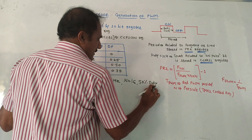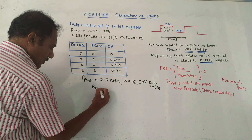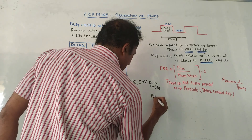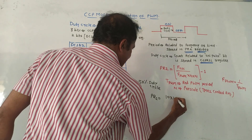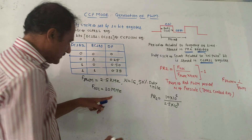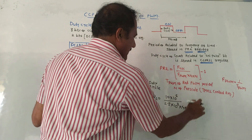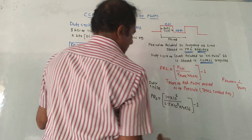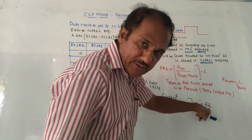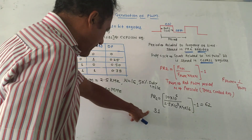If the value of f_oscillator is not mentioned, we choose 10 MHz. First, calculate PR2 using the formula: PR2 = (f_oscillator / f_PWM / 4 / N) − 1 = (10×10⁶) / (2.5×10³) / 4 / 16 − 1. Solving this gives PR2 = 62. Now for 50% duty cycle: 50% of 62 = 31. So the required count equals 31.